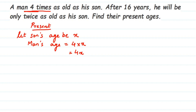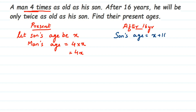Now we're going to talk about after 16 years. For example, if my age is 20, after four years my age will be 24 — I'm adding four years to my present age. Similarly, after 16 years, we add 16 to the present age. So the son's age after 16 years will be x + 16, and the man's age will be 4x + 16.